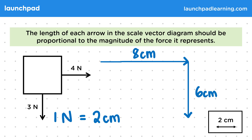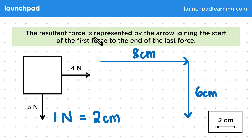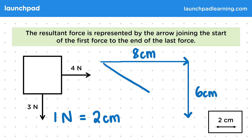So why exactly are scale vector diagrams so useful? Well, the resultant force is represented by the arrow joining the start of the first force to the end of the last force. By resultant force, we mean a single force that has the same effect as the individual forces. You're not expected to find the resultant of perpendicular forces mathematically at GCSE, but we can draw in the resultant force using a straight line, which has the same start and end as the other forces. So we can measure this arrow to determine the magnitude and direction of the resultant.